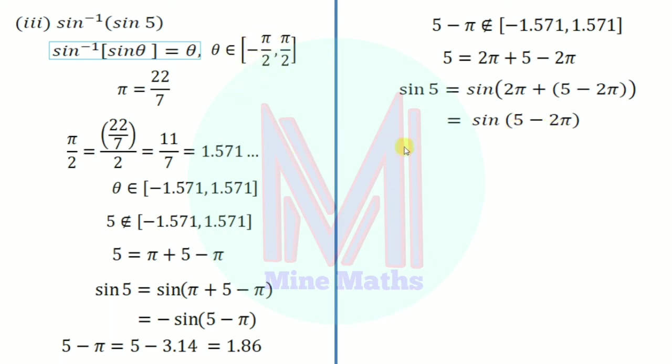We check this value: 5 minus 2 times π equals 5 minus 2 times 3.14 equals 5 minus 6.28, which gives us a value within the required limit.